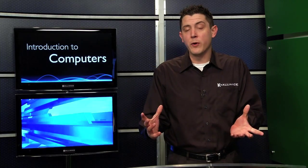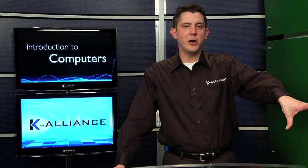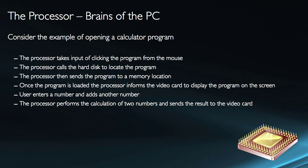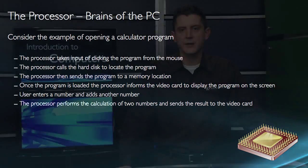The processor then sends the program to a memory location. Memory is storage — not permanent storage — and it's where programs will be when they're up and running. So the processor gets it off the hard drive and puts it into memory. Once the program is loaded, the processor informs the video card to display the program on the screen. Then I enter a number and add another number. The processor gets those two numbers, performs the calculation, and sends the results out to the video card. That's actually a fairly simplistic example of how the processor is used.